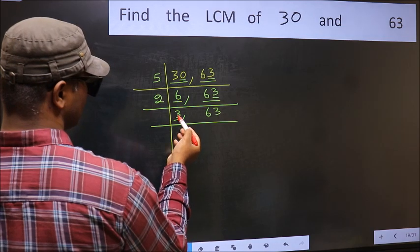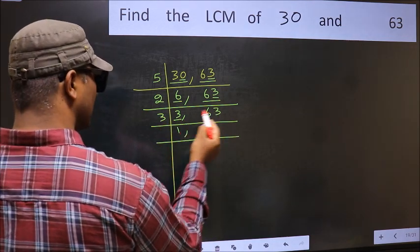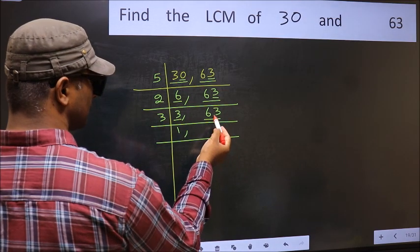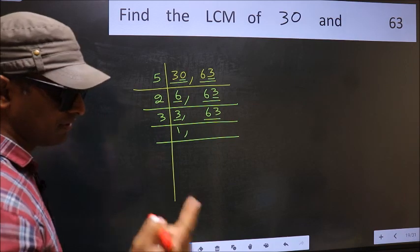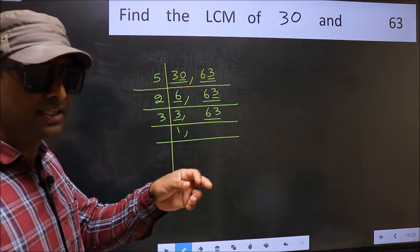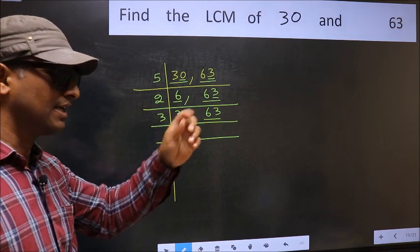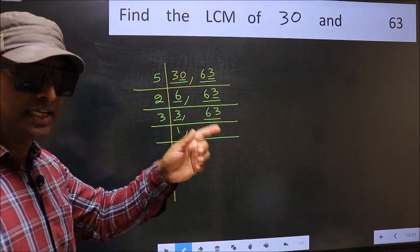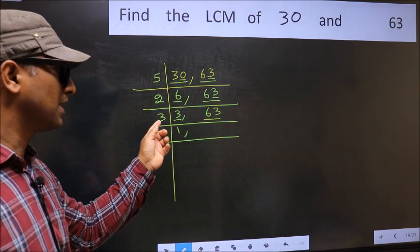Now here we have 3. 3 is a prime number, so 3 times 1 is 3. The other number, 63. To check whether 63 is divisible by 3 or not, add the digits: 6 plus 3, we get 9. And 9 is divisible by 3, so this number is also divisible by 3.